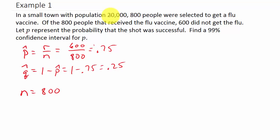Now let's see, remember our formula is E equals Z sub C times the square root of P hat times Q hat over N. So we've got P hat, Q hat, and N. Now we need Z sub C.